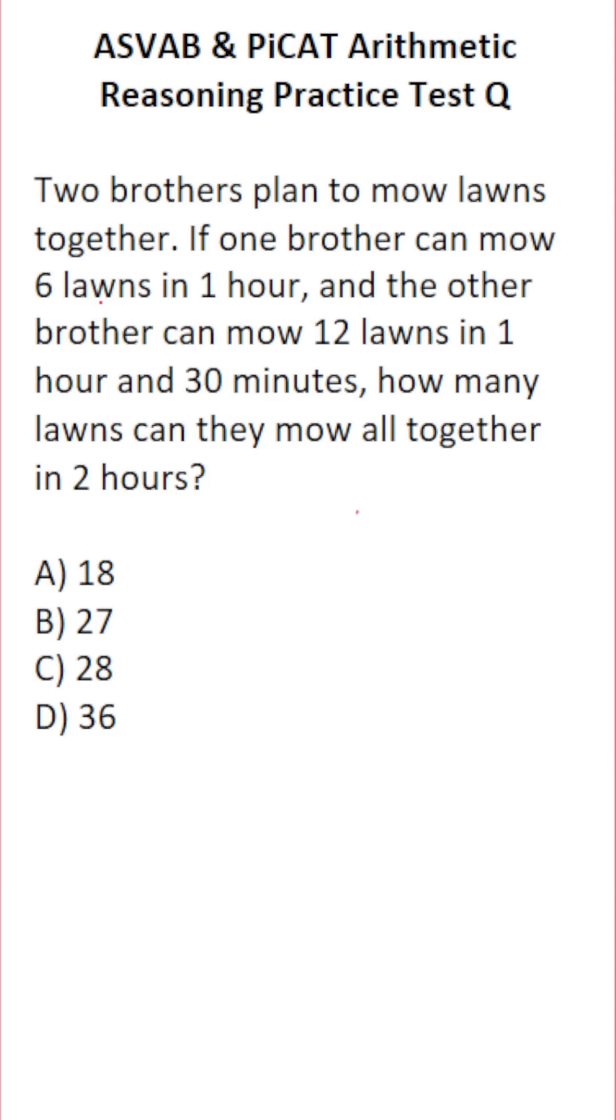So let's think about this problem this way. Let's say these two brothers are working at separate houses. So if we calculate how much work one brother can do in two hours and how much work another brother can do in two hours, and we combine those two rates, we'll know how many lawns they can mow together in two hours.